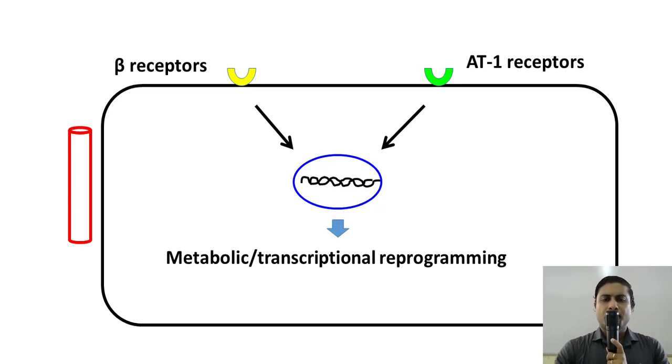What does transcriptional reprogramming mean? Almost all cells contain nuclei, and the nuclei contain DNA, which of course has genes. Whenever these genes are activated, they undergo transcription and translation, and various proteins are formed which carry out the functions of that particular cell. In a cardiac myocyte, when there is prolonged and sustained stimulation of the beta-adrenergic receptors and the AT1 receptors, the genes in the DNA do get stimulated — but upon transcription and translation, they produce altered proteins which carry out functions that are suboptimal.